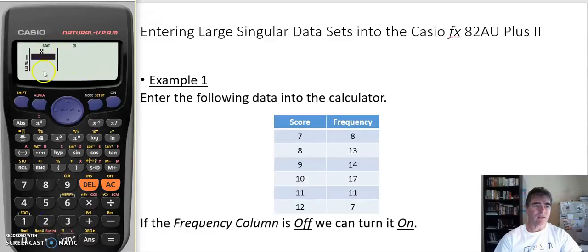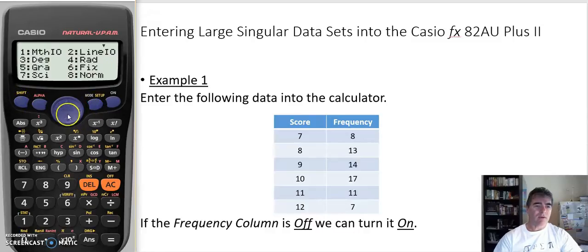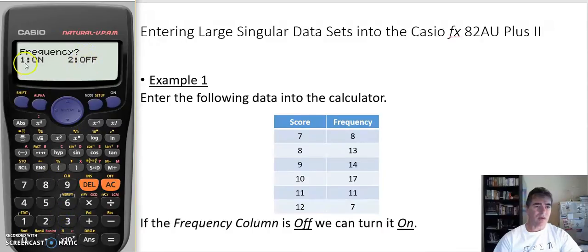So that leaves me with just my score, but I don't want that. So shift mode, arrow down, and we want our statistics and put our frequency back on. Now let's do that and then we've got our score and our frequency, just like our table has here. So let's go into that.